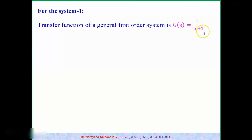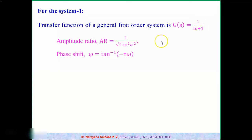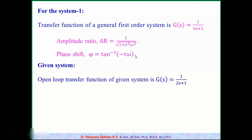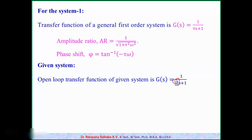System 1 is in the form of a general first-order system. The general first-order system transfer function is 1/(τs + 1), and its AR value is 1 / √(1 + τ²ω²), with phase shift phi = tan⁻¹(−τω). Comparing our system 1/(2s + 1) with this general form, tau equals 2, while everything else remains the same.